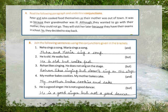Second: He is old. He walks fast. Isse hume but conjunction se join karna hai: He is old but walks fast. Third: Rohan likes singing. He does not sing on the stage. Isse bhi but conjunction se join karna hai: Rohan likes singing but doesn't sing on the stage. Fourth: My mother bakes cookies. My mother bakes cake. Isse hume and conjunction se join karna hai: My mother bakes cookies and cake. Fifth: He is a good singer. He is not a good dancer. Isse hume but conjunction se join karna hai: He is a good singer but not a good dancer.